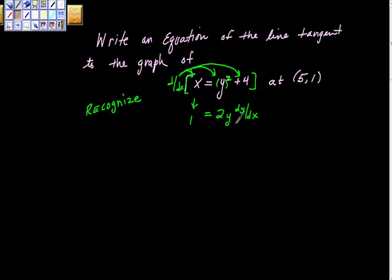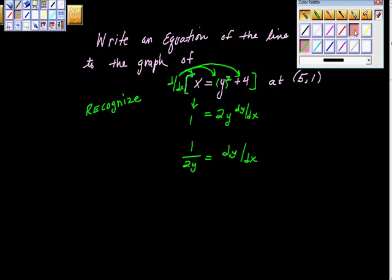So hopefully you see where I got all of that. And now what I want is, I want dy/dx by itself. So I'm going to divide both sides by 2y. So we're going to get 1/(2y) = dy/dx. And we want the derivative at this point.